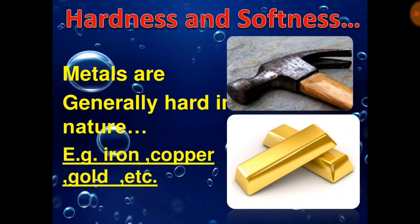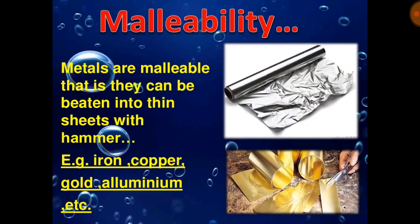Hardness and softness. Metals are generally hard in nature because of their closely packed structure. For example, iron, copper, gold, etc. Malleability — metals are malleable, that is they can be beaten into thin sheets with a hammer. For example, aluminium sheets.